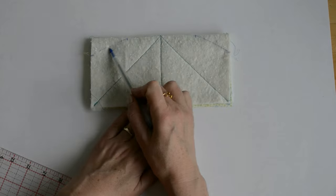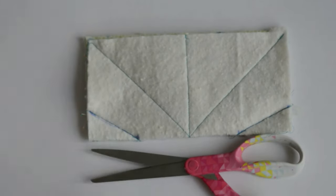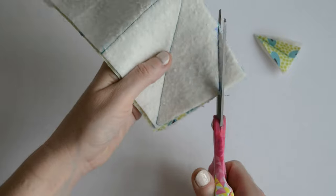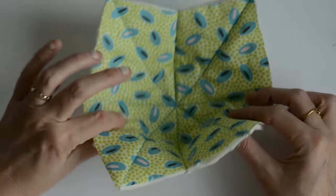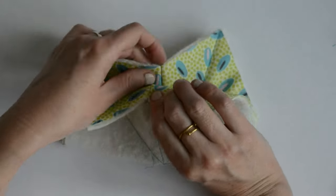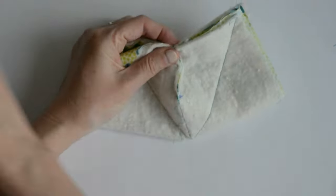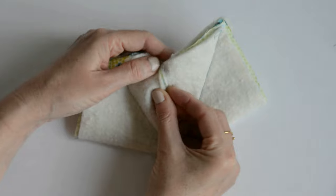I'm going to sew that, making sure I backstitch at each end of that dart just to stop it unraveling. Now I'm going to trim that and we're going to open the fabric out and we're going to fold it the other way.